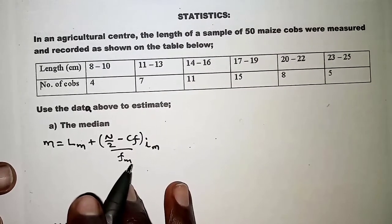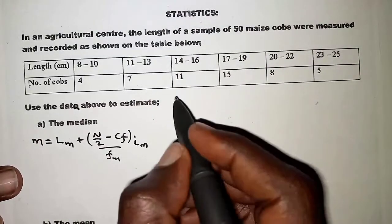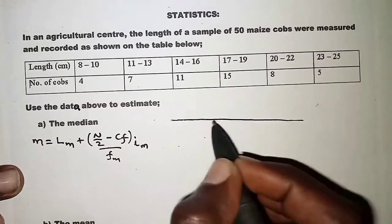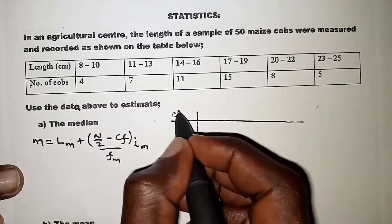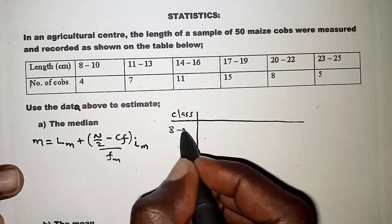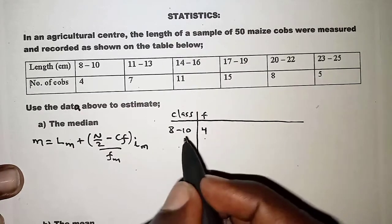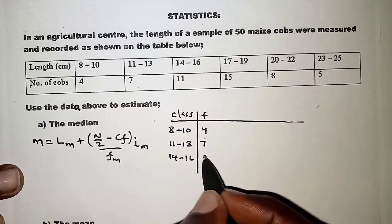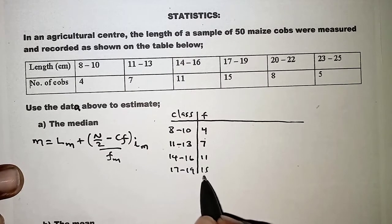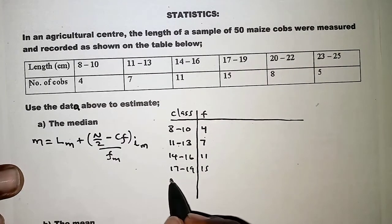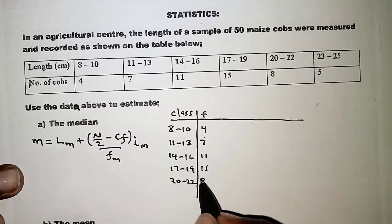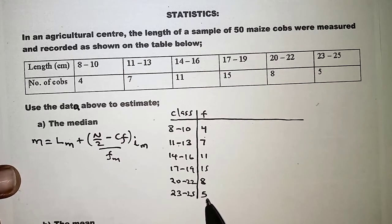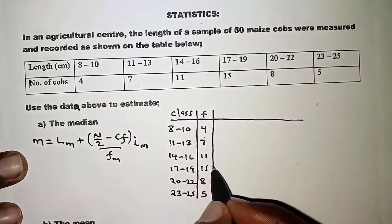From there we generate a frequency distribution table. We have the class intervals and their frequencies: 8–10 has frequency 4, 11–13 has 7, 14–16 has 11, 17–19 has 15, 20–22 has 8, and 23–25 has 5. The formula will guide us on what columns to include in the table.